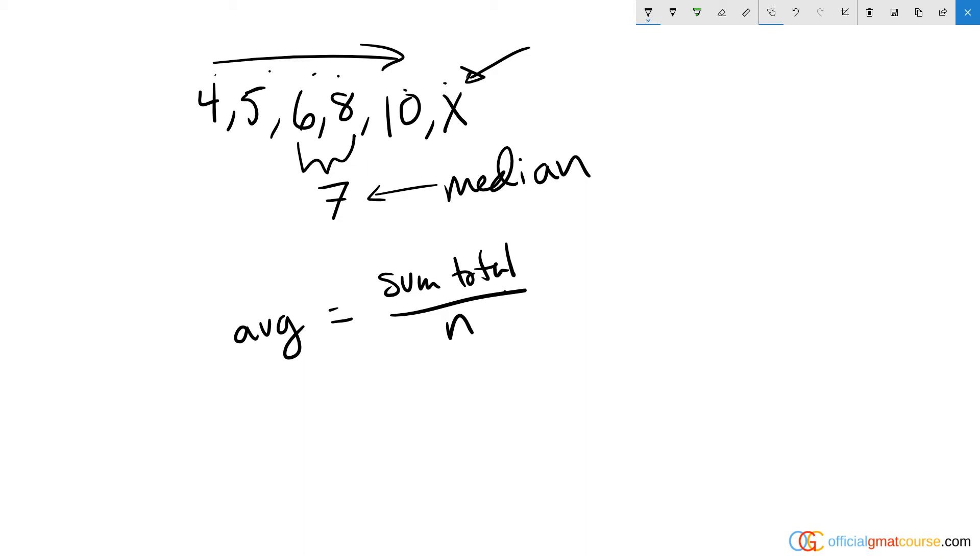If the median of these measures is six-sevenths times the mean, so if the median is equal to six-sevenths times the mean, which I prefer to call the average, then all I really know is that the median is equal to six-sevenths times the total sum of these numbers divided by six.